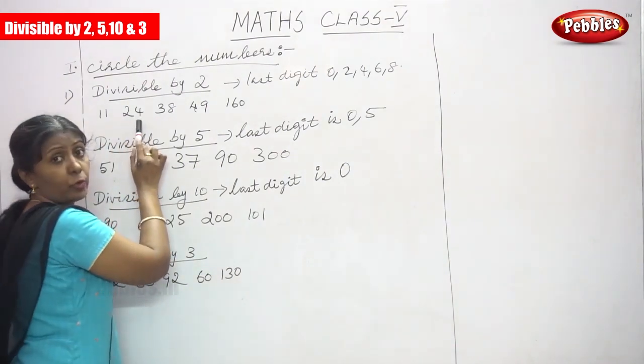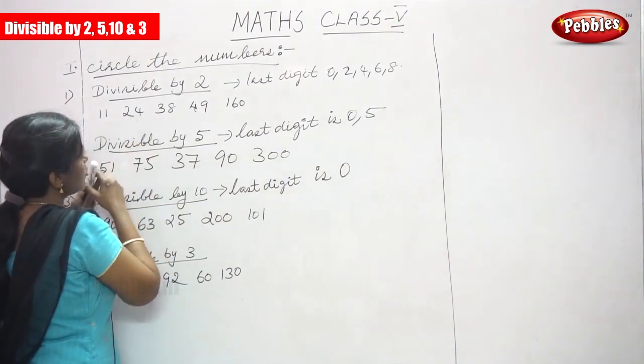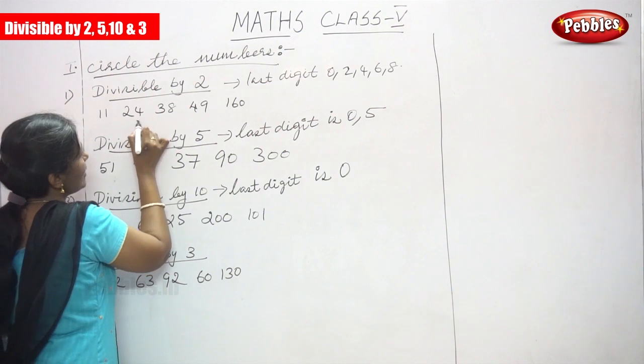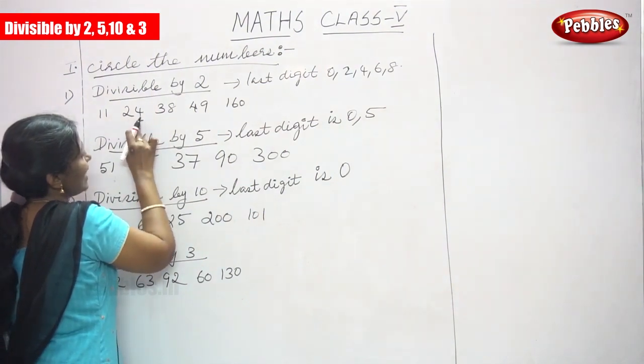24: the last digit is 4, so it is divisible by 2.